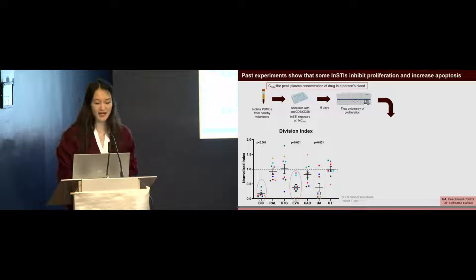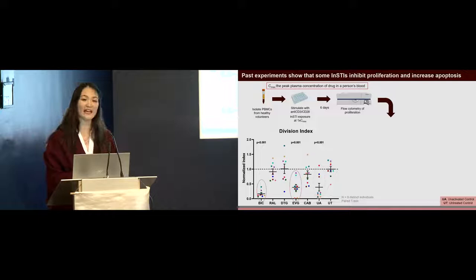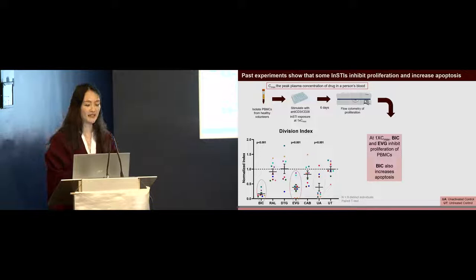In the figure, we have the five different INSTI treatments, as well as the unactivated and untreated controls. All samples were normalized to the DMSO vehicle control. As we can see, with BIC and EVG treatment, there is a decrease in division index similar to the unactivated controls, indicating that BIC and EVG are inhibiting the proliferation of these cells.